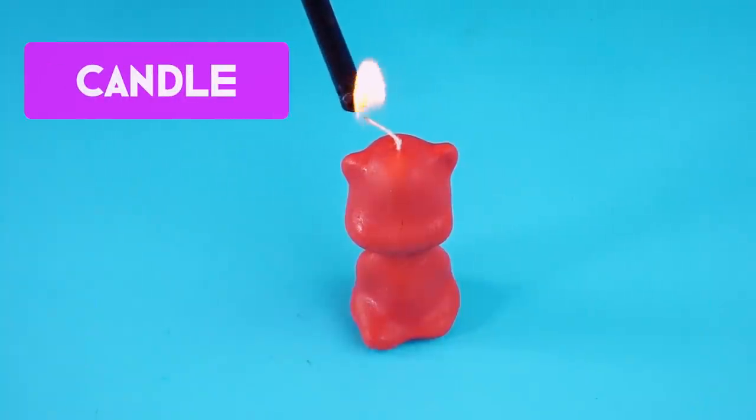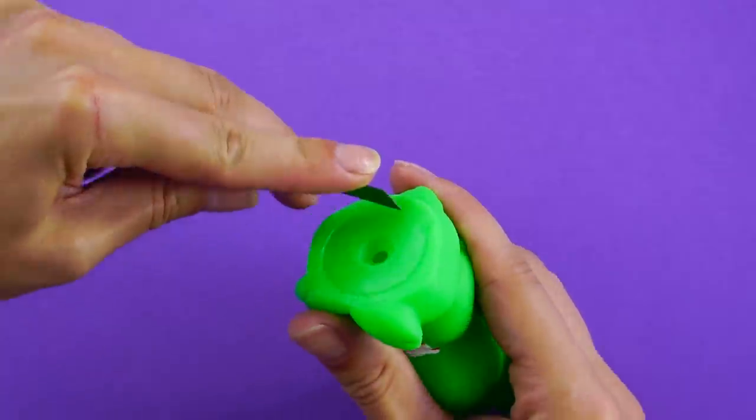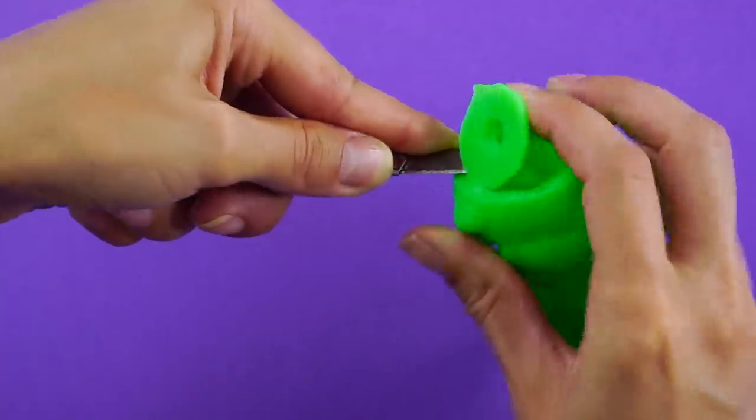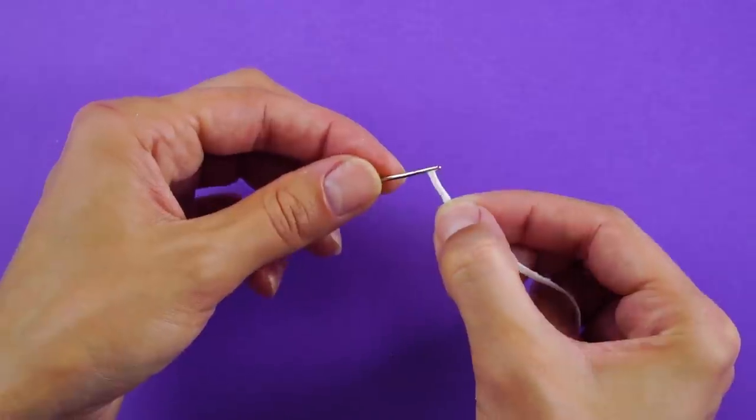Candle. Want to design your own candle? Let's go for it! Grab a plastic toy like this one. Using an X-Acto knife, carefully cut out the bottom of the toy. Pull a wick out of a candle or you can buy wicks at the craft store.